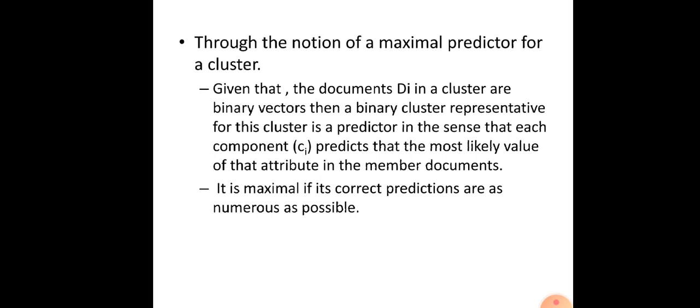There is another theoretical way of looking at the construction of cluster representatives through the notion of proximal predictions of a cluster. Here we have documents di in a cluster as binary vectors. A binary cluster representative for this cluster is a predictor — we view all components of the cluster representative as predictors, where each component ci predicts the most likely value of that attribute in the member documents. It is maximal if its correct predictions are as numerous as possible.